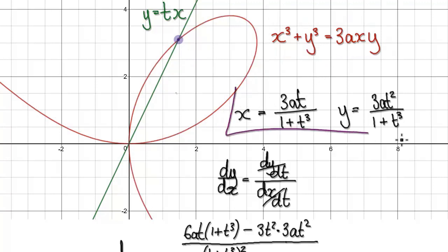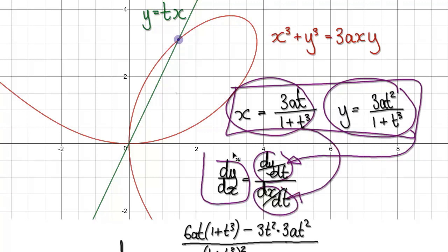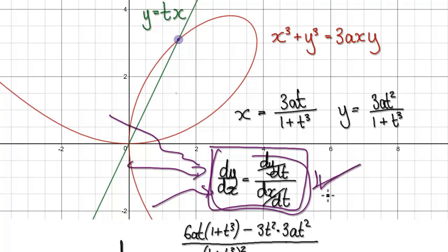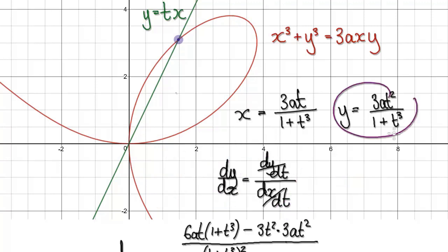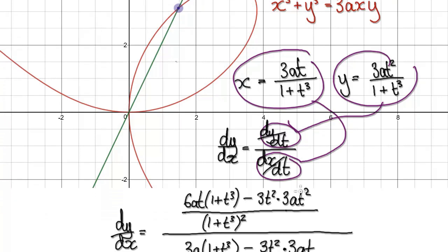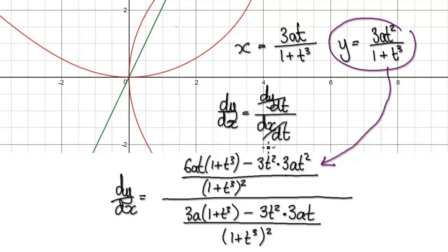So we've seen the parametric equations for this volume. If you want to work out dy by dx, you would differentiate the y with respect to t, and then differentiate the x with respect to t. We've seen why this is true in one of the early videos — track back if you don't understand why. So if you want to find dy by dx, differentiate dy with respect to t, and then differentiate x with respect to t.